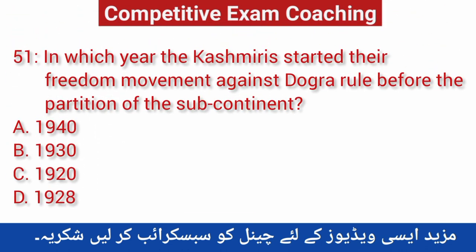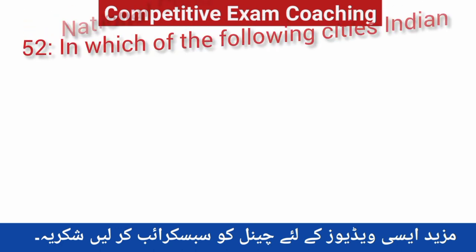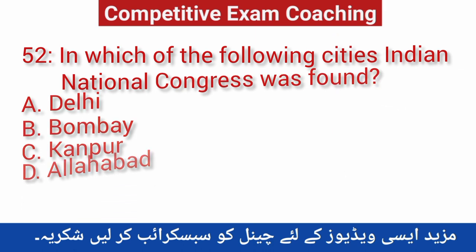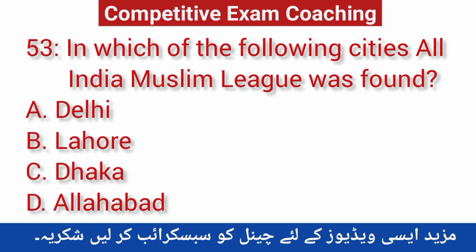Question number fifty-one: In which year did the Kashmiris start their freedom movement against Dogra rule before the partition of the subcontinent? Correct answer is B — 1930. Question number fifty-two: In which of the following cities was the Indian National Congress founded? Correct answer is B — Bombay. Question number fifty-three: In which city was the All India Muslim League founded? Correct answer is C — Dhaka.